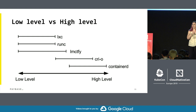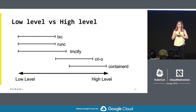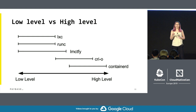Then we have the high-level runtimes like CRI-O and ContainerD, and there are a few others. The reason why we have high-level runtimes is because just creating namespaces and isolating processes is not enough to run a container. You need APIs, you need additional functionality. You need the ability to pull and push images and unpack them and then pass them to the low-level runtime.